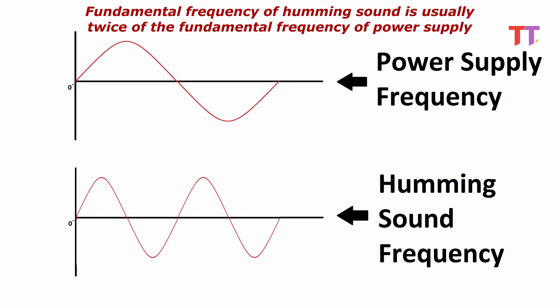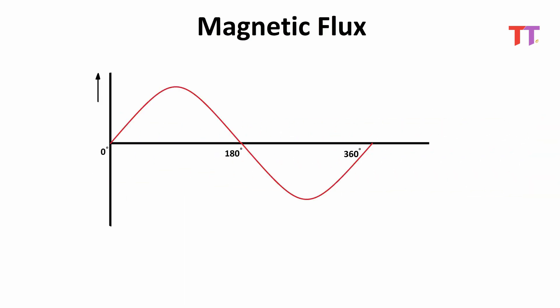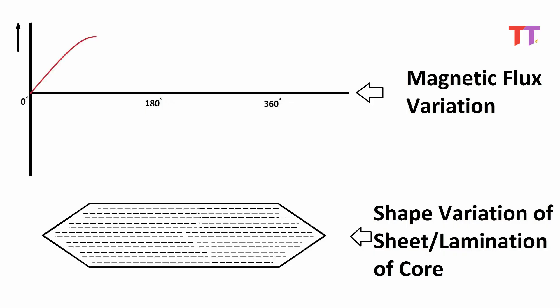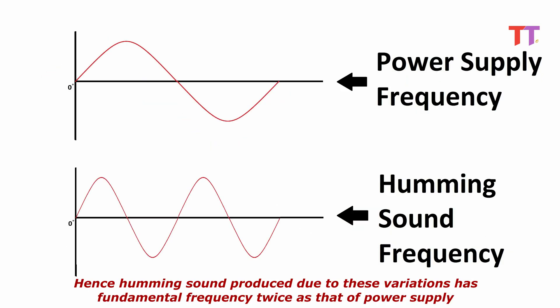The fundamental frequency of the humming sound is usually twice the fundamental frequency of the power supply. For example, the humming sound frequency would be 120 Hz for a 60 Hz power supply and 100 Hz for a 50 Hz power supply. As we know, the magnetic flux produced in the core has sinusoidal behavior similar to that of current and voltage. In the waveform, flux reaches its peak twice in one cycle — once on the positive side and once on the negative side. Hence, the transformer core extends and retains itself twice in one cycle of magnetic flux, and the humming sound produced has a fundamental frequency twice that of the power supply.